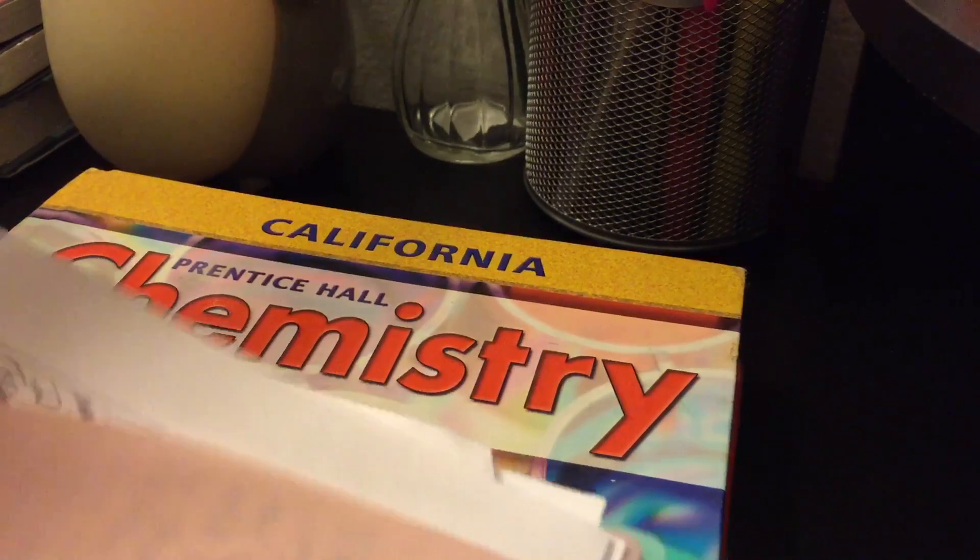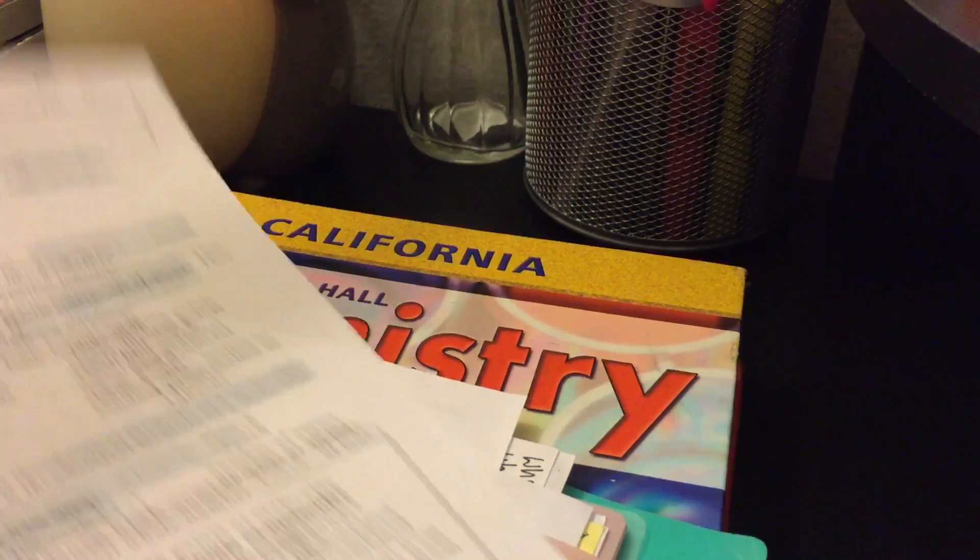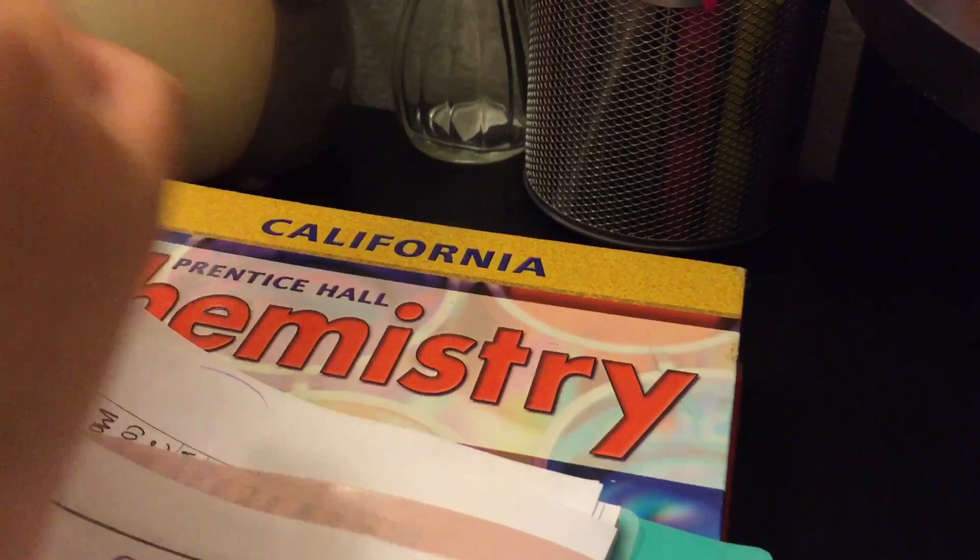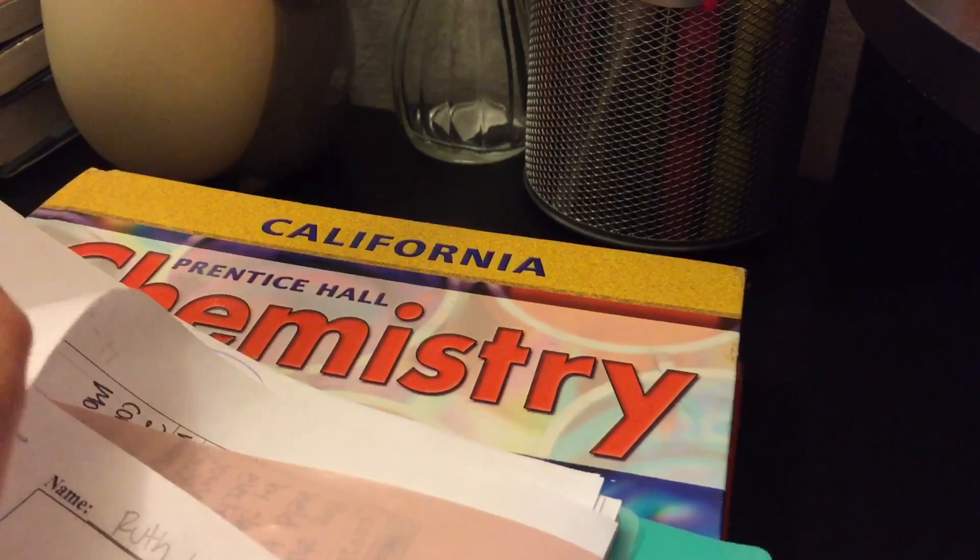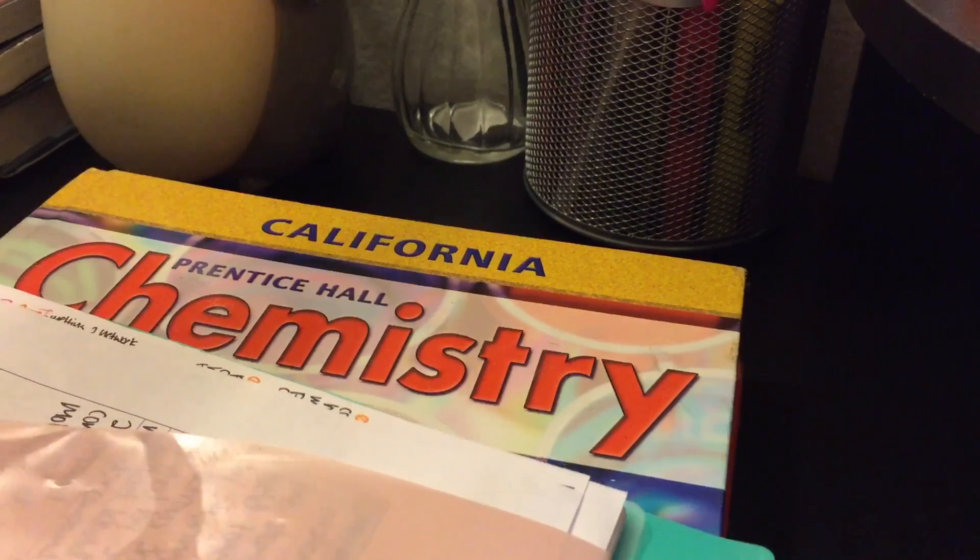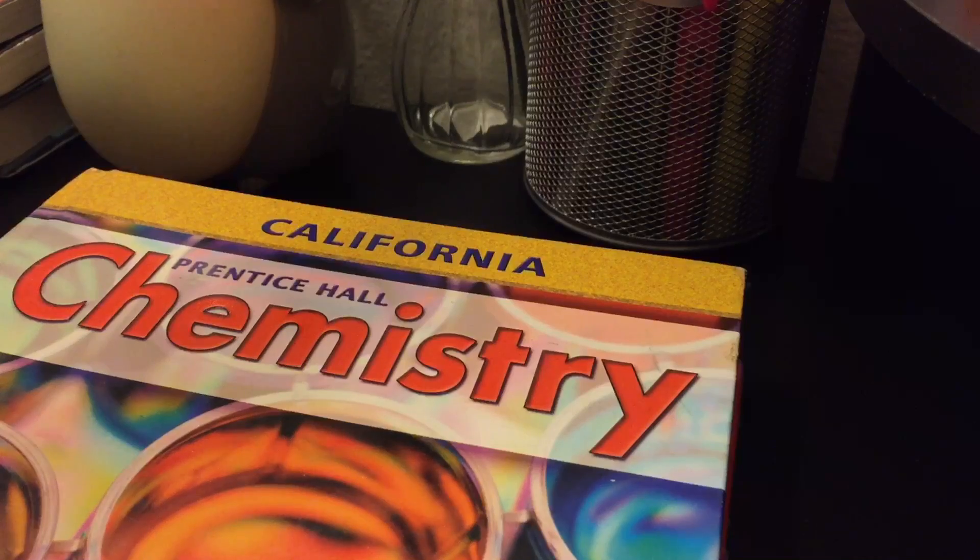So we have notes and then we have a study guide that we are given for each section. So specifically for chemistry, I usually study my study guide, which is given to me at the end of each section right before a test. And I'll just usually go over that and just study that.